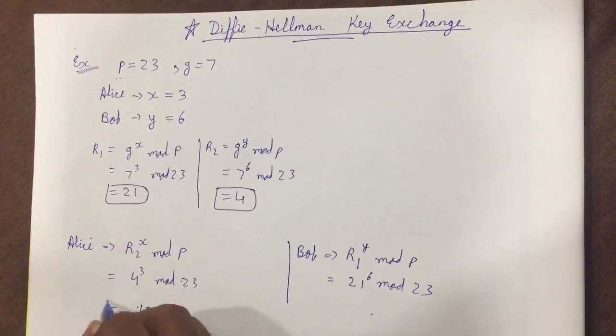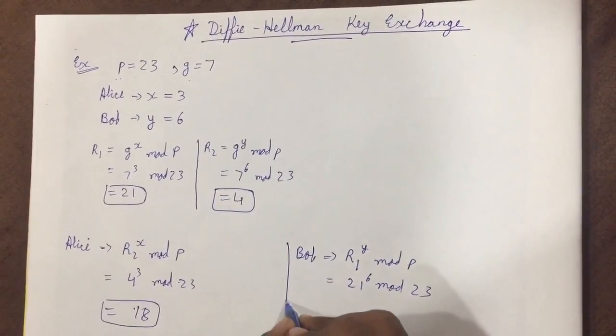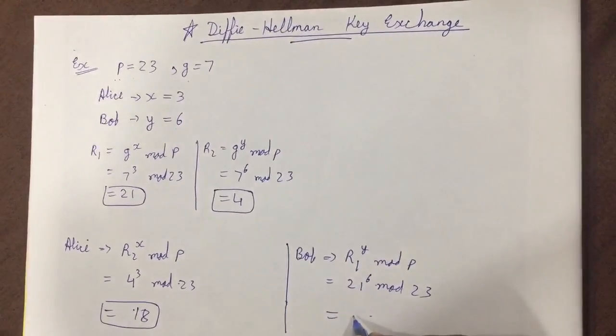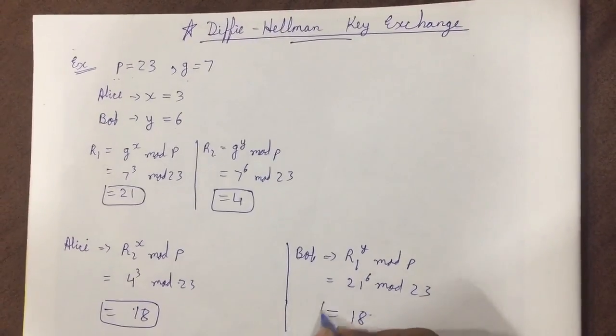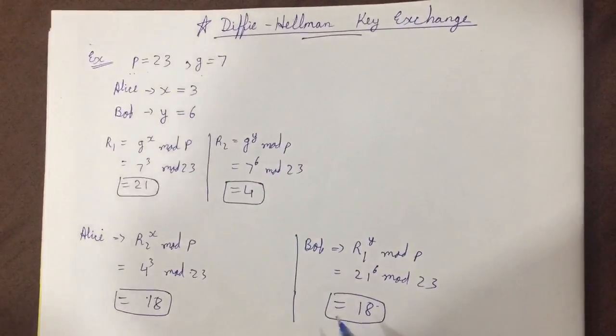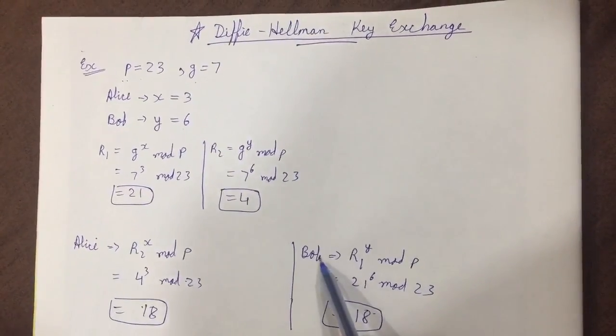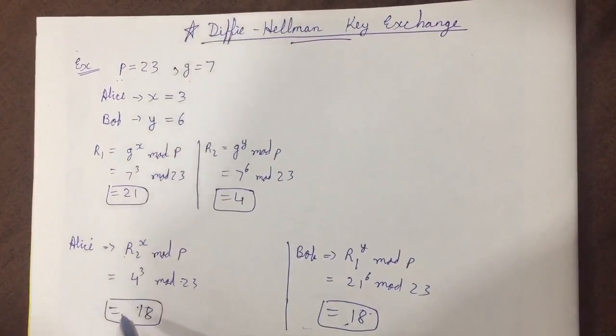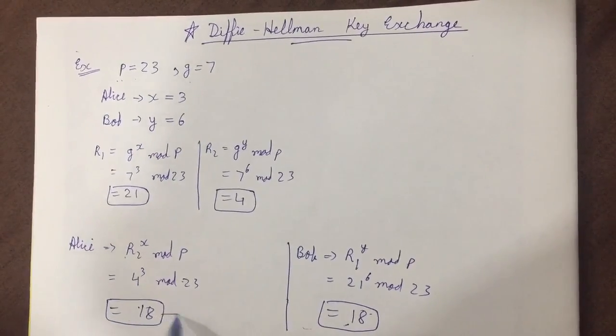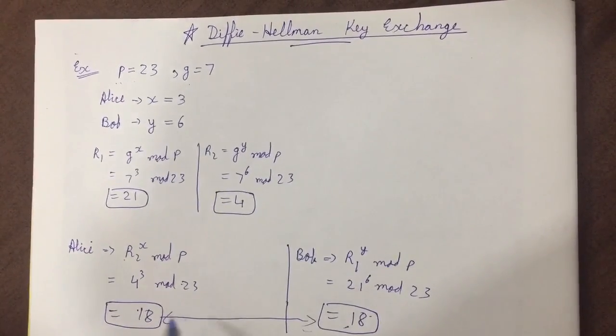And over here, if you solve it using calculator, you will be getting 18 over here. So yes, the key values for Bob and key values for Alice are same. So if this scenario arises, then and only then we would be able to exchange the keys.